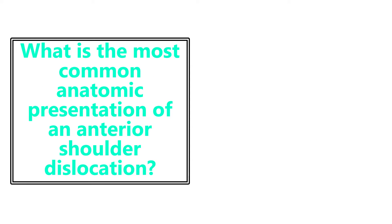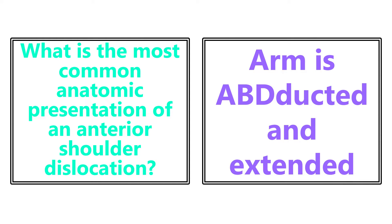What is the most common anatomic presentation of an anterior shoulder dislocation? The arm is going to be abducted and externally rotated. That is how they will describe an anterior shoulder dislocation.